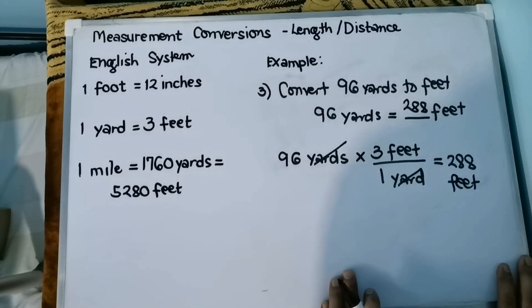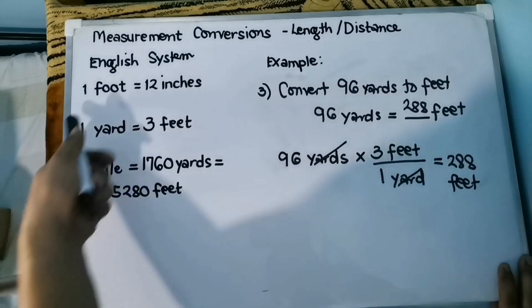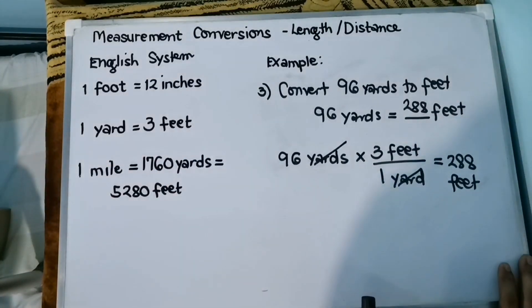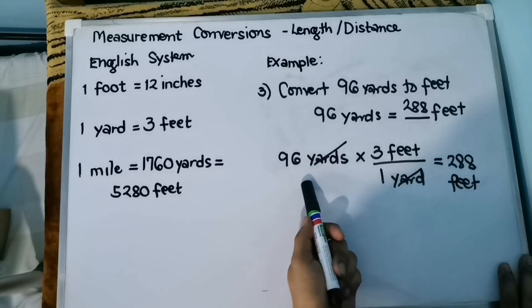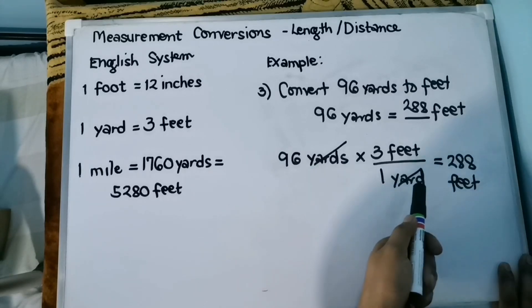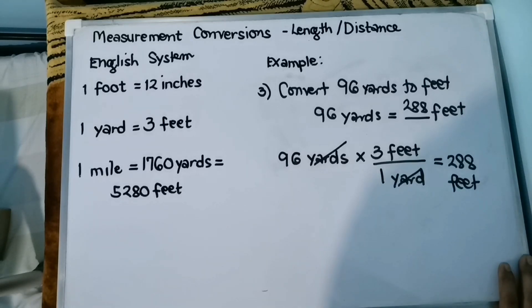So that concludes our lesson regarding measurement conversions for length and distance using the English system. Remember these three conversions. And for the solution, remember to place the unit you're converting in the denominator so you can cancel it out. I hope that you learned something today. Don't forget to like and share this video, and see you on my next video lesson.